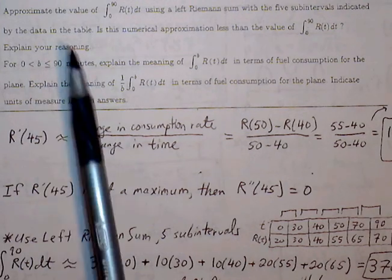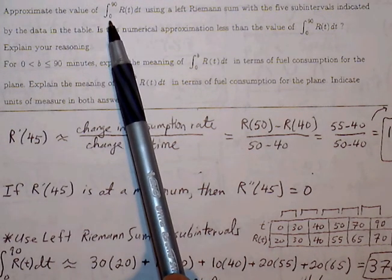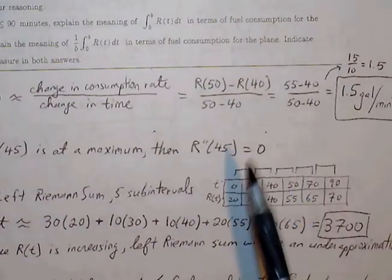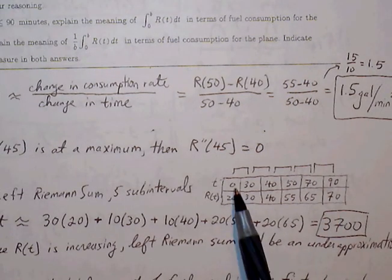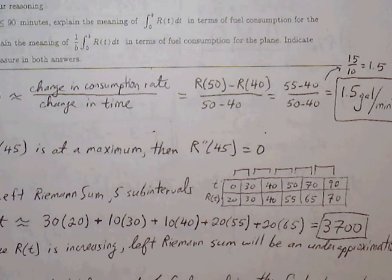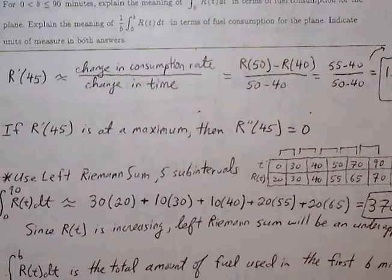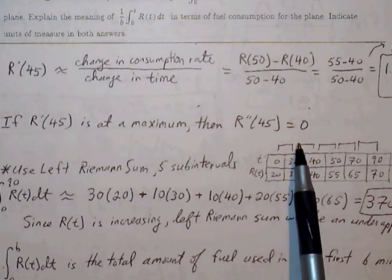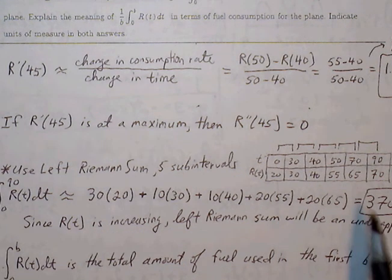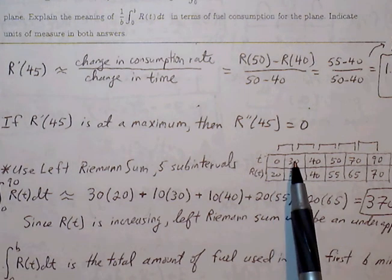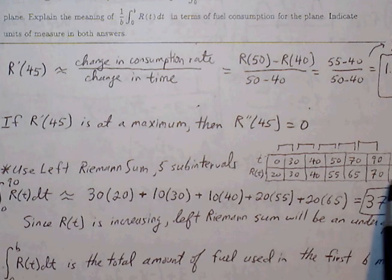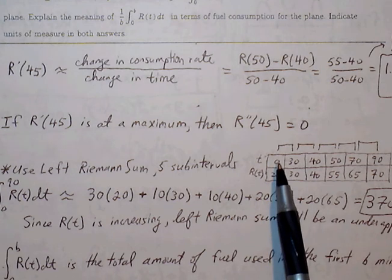For part C, approximate the value of the definite integral of R of T from zero to 90 using a left Riemann sum. I rearranged the table of values horizontally. We can divide this into five subintervals. The first subinterval, between zero and 30, has width 30 times height 20. The second rectangle, between 30 and 40, is 10 times 30. Then, 10 times 40 for the next.